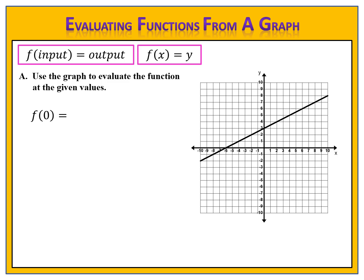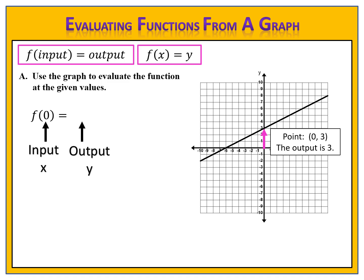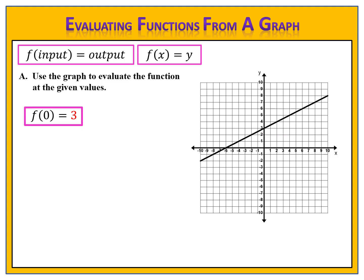We want to know what f of 0 is equal to. F of input equals output, and 0 is an input, or an x value. So we'll go along our graph to the x-axis where x is 0, and draw a line right up to the graph. That gives us the point where 0 is the x and 3 is the y — 0 is the input and 3 is the output. So f of 0 equals 3.